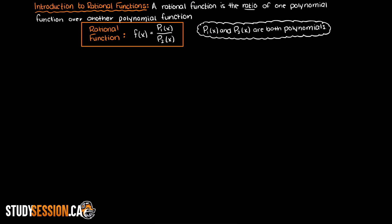Before we get too far, let's quickly remember what a polynomial is. The word polynomial when broken up is 'poly' which means many, and 'nomial' in this context means terms — therefore a polynomial is many terms. A polynomial follows this general formula presented here.